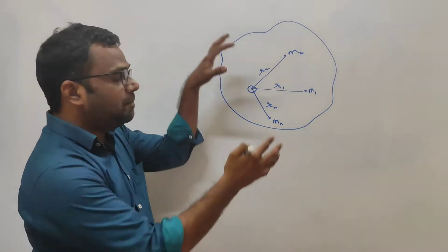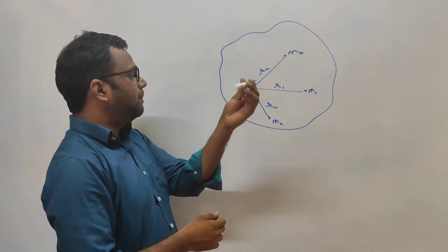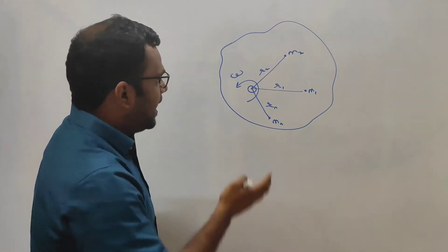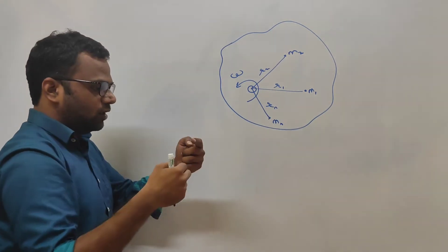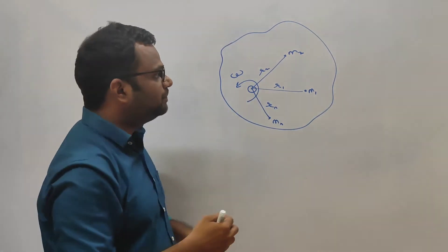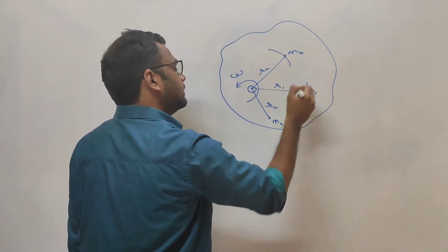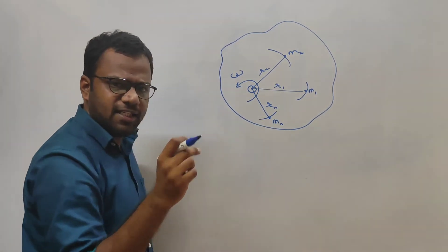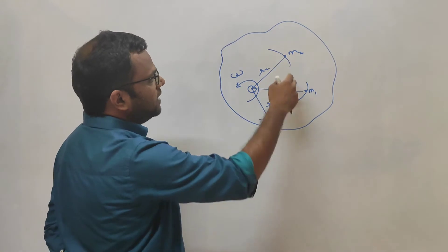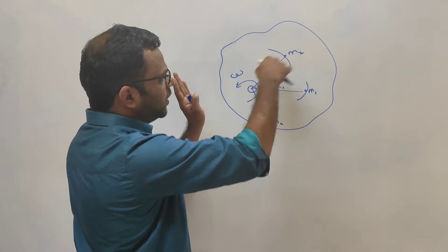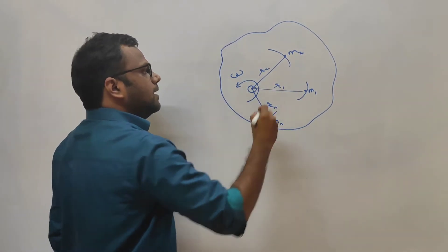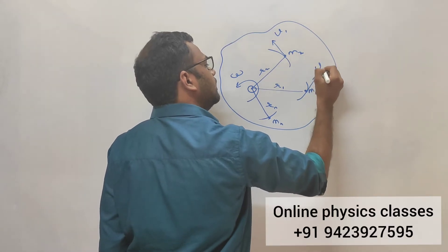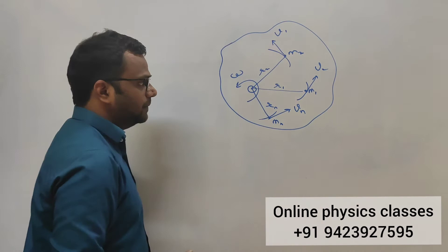Let us say this is a body which is rotating about an axis passing perpendicular to the board through this point, rotating with some angular velocity omega. As the body rotates, each and every particle — except the ones on the axis of rotation — will be moving in circular motion. So m1, m2, ... mn are the masses of the particles of the body, at perpendicular distances r1, r2, ... rn from the axis of rotation, and they will have linear velocities v1, v2, ... vn.